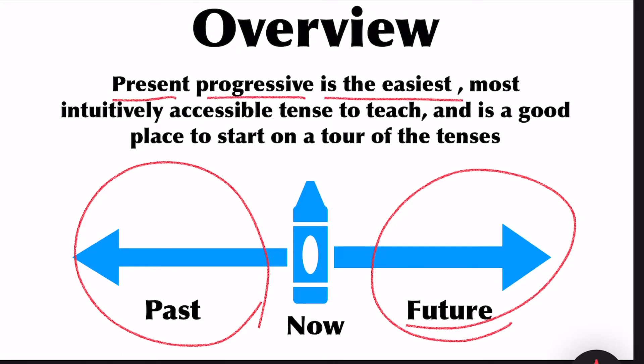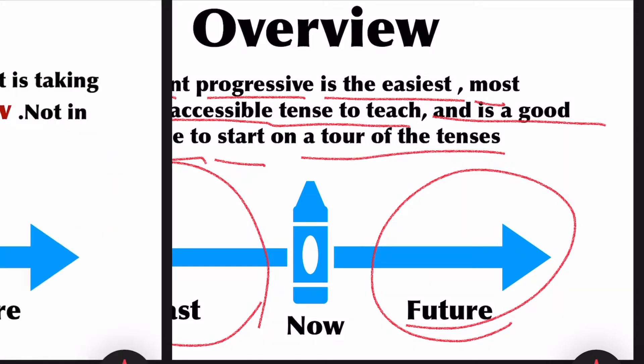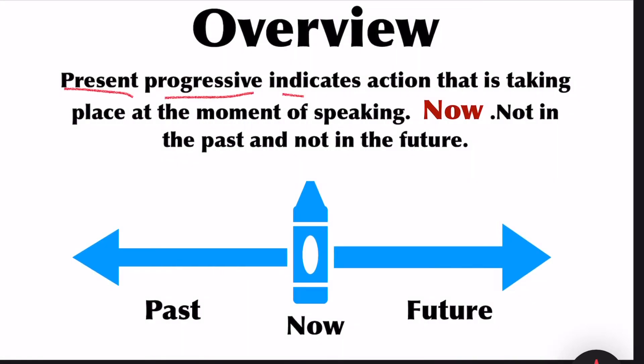Present progressive is the easiest, most intuitively accessible tense to teach and is a good place to start on a tour of the tenses. Present progressive indicates action that is taking place at the moment of speaking now, not in the past and not in the future.